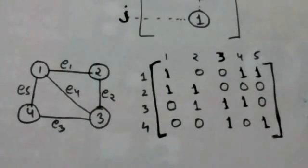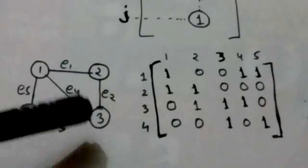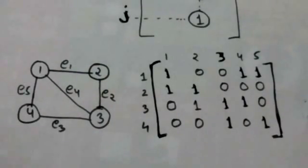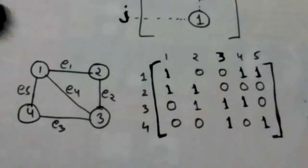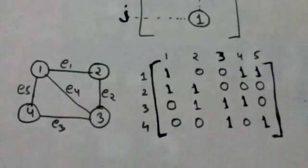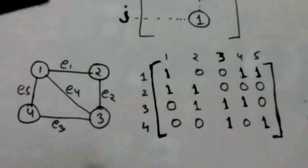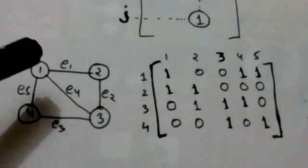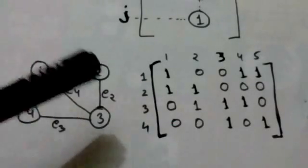Now, in this graph edge E2 joins vertex 2 and vertex 3. Therefore, in the incidence matrix the entries at the second row and second column and at the third row and second column are both one, and all other entries in the second column are zero. Edge E3 joins vertex 1 and vertex 3.